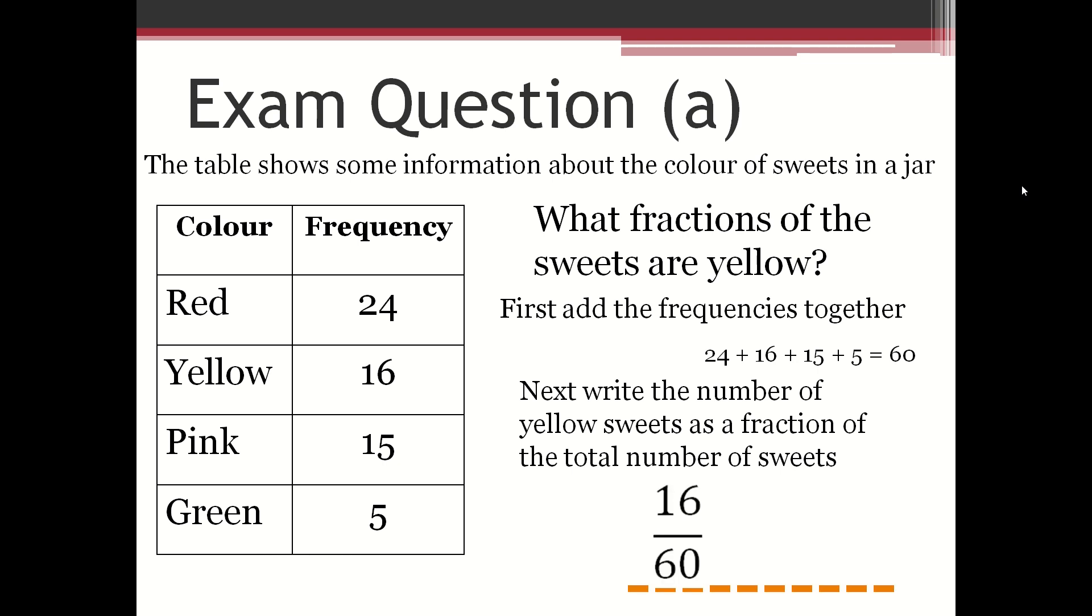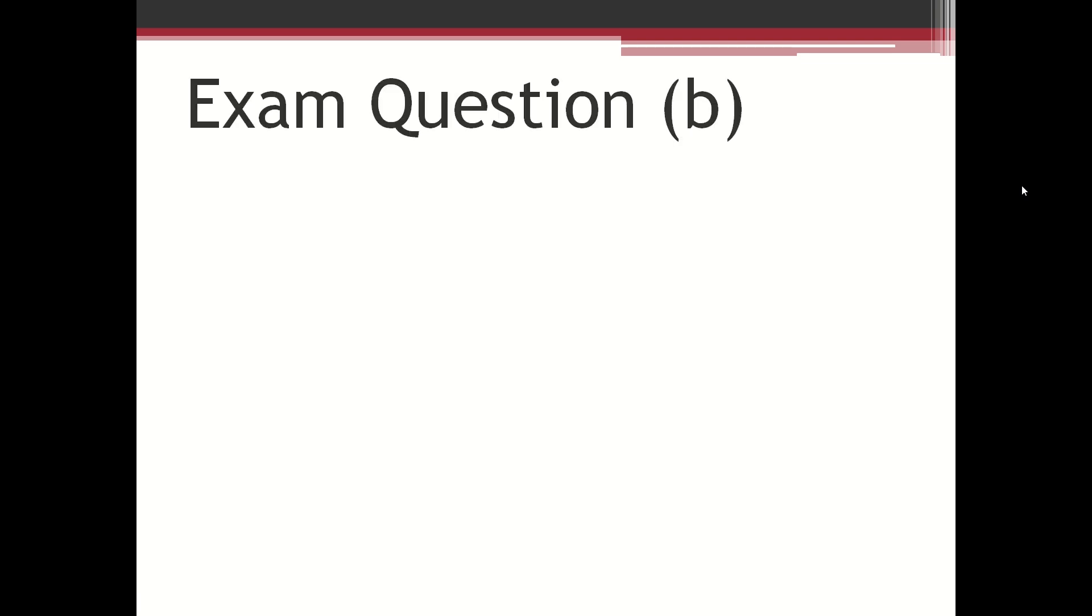so that would be 16 over 60, or simplified, 4 over 15. Now we're going to look at the second half of this exam question: draw an accurate pie chart to show the information in the table.